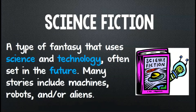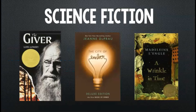The fourth subgenre of fiction we'll talk about is science fiction, which is a type of fantasy that includes science and technology and is often set in the future. Many stories include machines, robots, and/or aliens. Here are three novels that can be categorized as science fiction. The first novel, The Giver, follows an 11-year-old boy, Jonas, who lives in a futuristic society that has eliminated all pain, fear, war, and hatred.